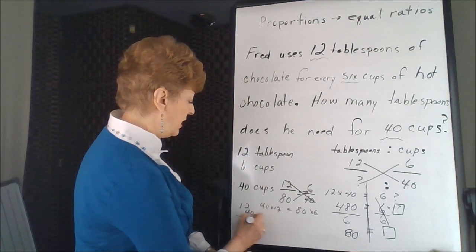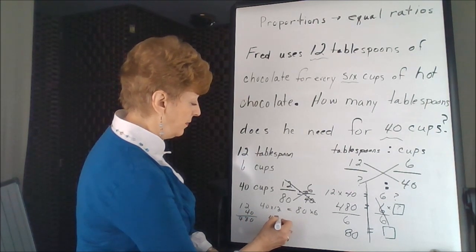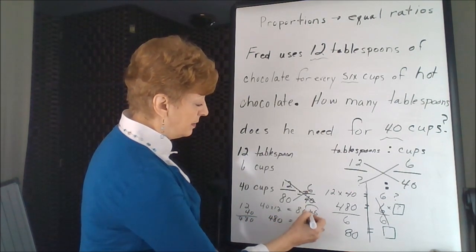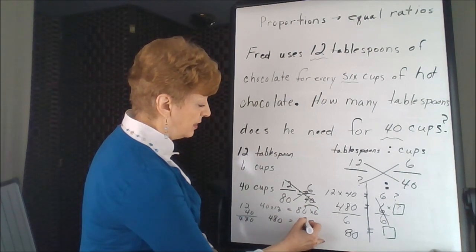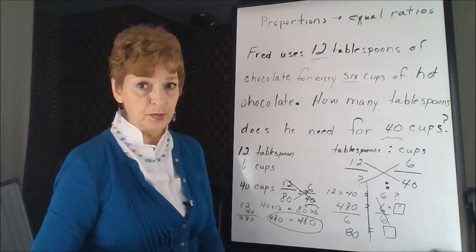12 times 40 is 480. 80 times 6 is 480. You have solved your proportion.